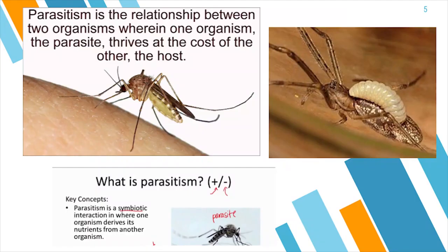Parasitism marks an interaction between a host and a parasite. Parasitism is a symbiotic interaction in which one organism derives its nutrients from another organism. In one example, one organism lays its eggs in another organism. Once the eggs hatch, they thrive at the cost of the host.